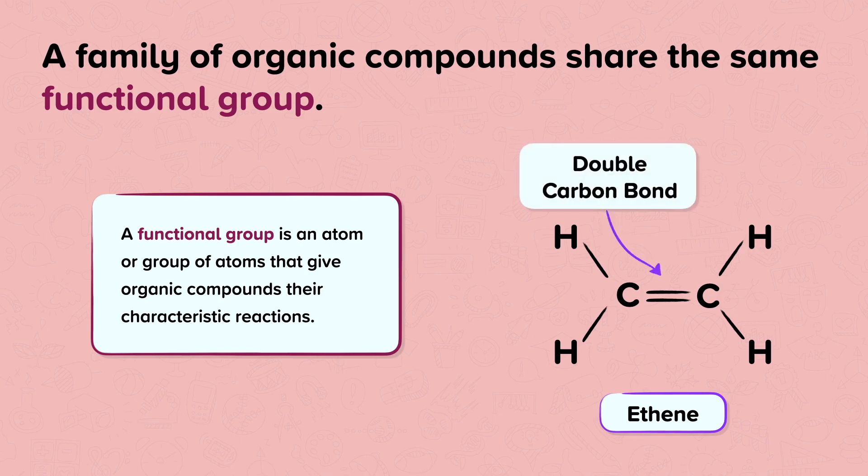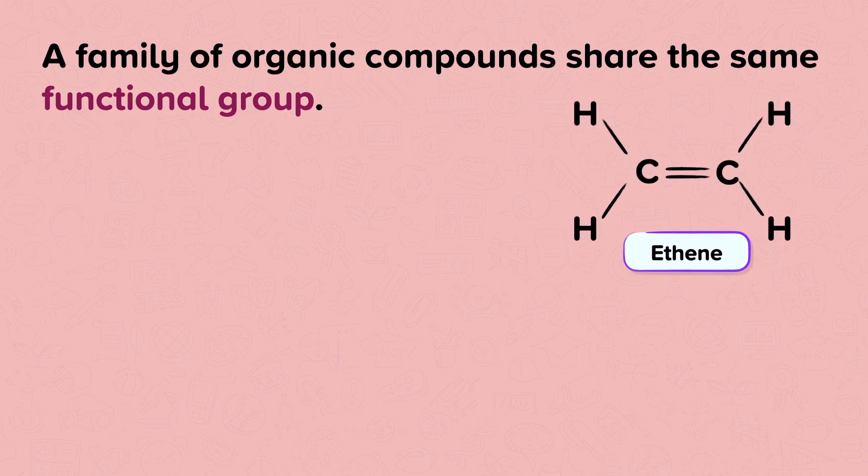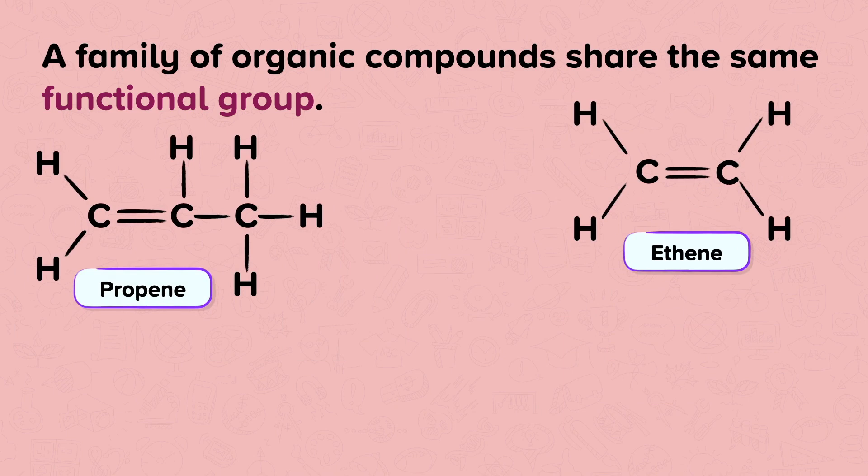An example of a functional group is the carbon-carbon double bond, shown here in the alkene ethene. All alkenes contain a carbon-carbon double bond in their molecules.